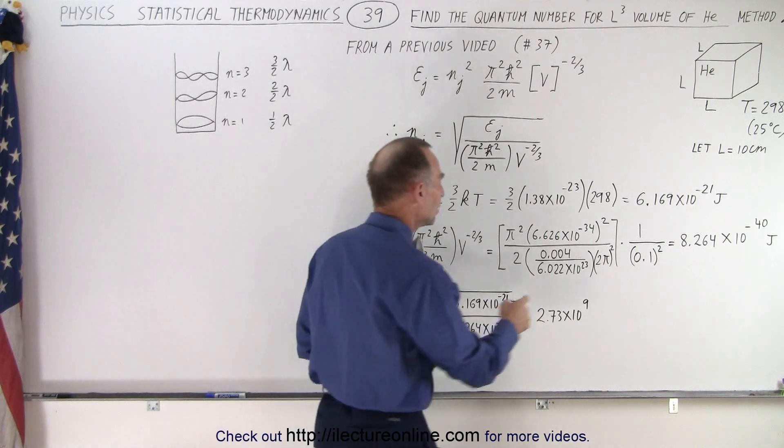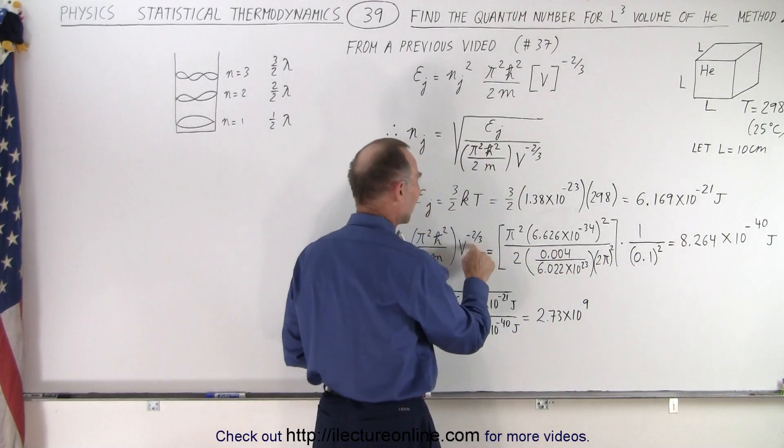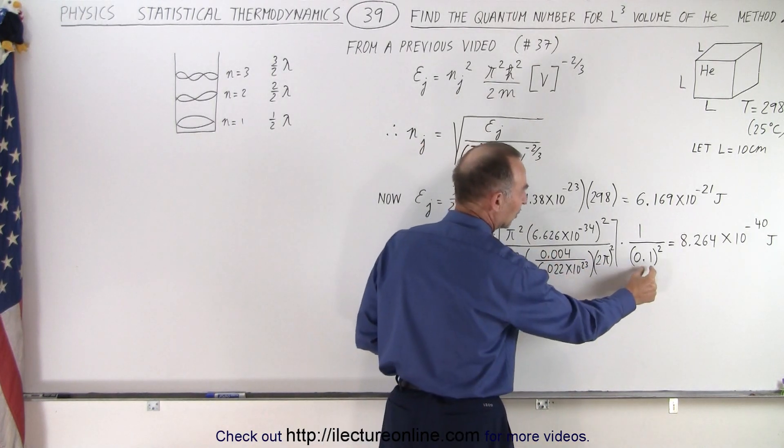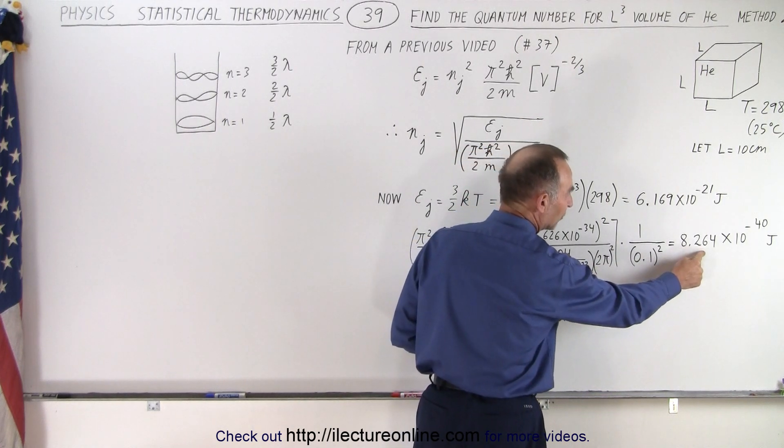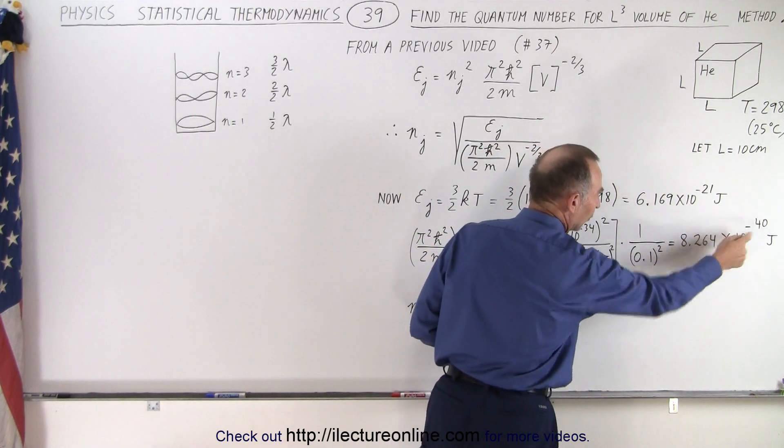And then we multiply that times V to the minus 2/3. Essentially, that would be the length squared in the denominator. And then we get this result, 8.264 times 10 to the minus 40 joules.